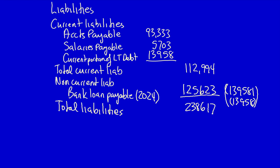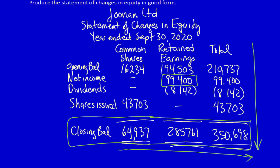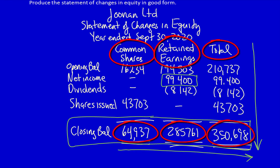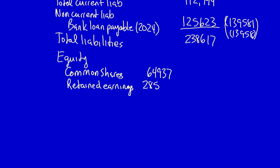We now move on to equity, also called shareholders' equity. Note that the equity figures come directly from the statement of changes in equity — let's just go back there for a moment. The statement of changes in equity gives us all the balances we need for common shares, retained earnings, and total equity: $64,937, $285,761, and $350,698, which we take to the statement of financial position equity section. We start with common shares: $64,937. Then retained earnings: $285,761. That gives us total equity of $350,698.